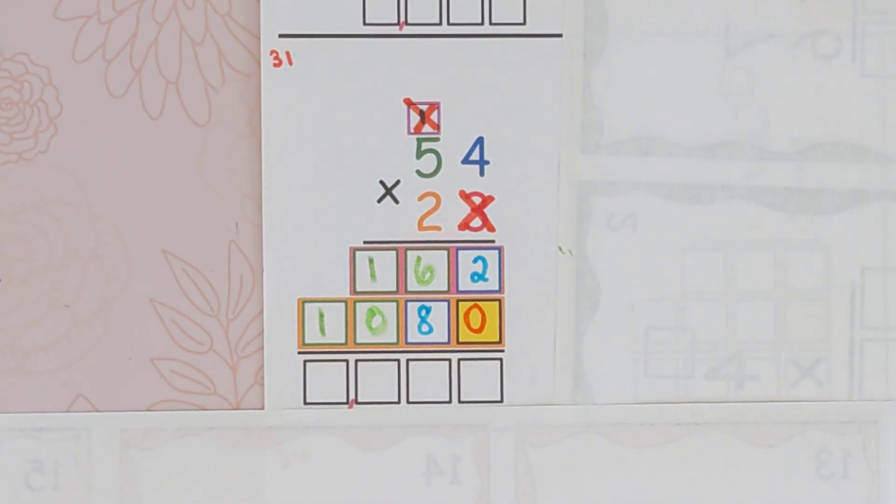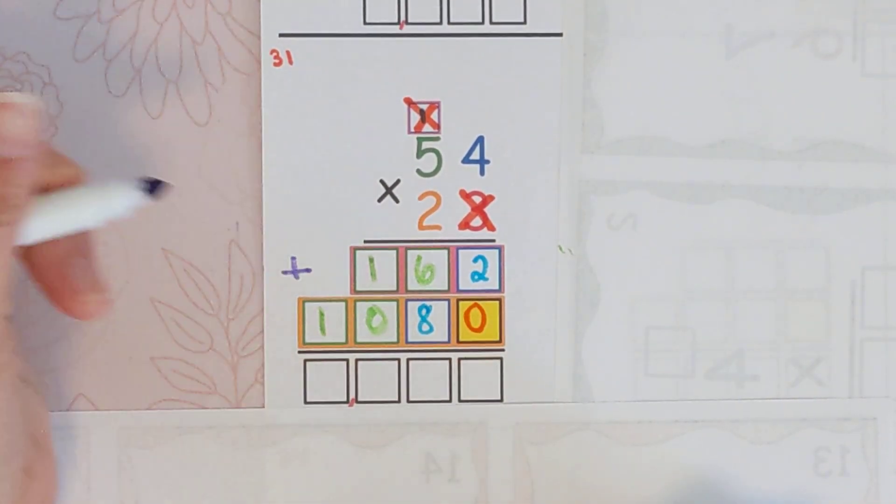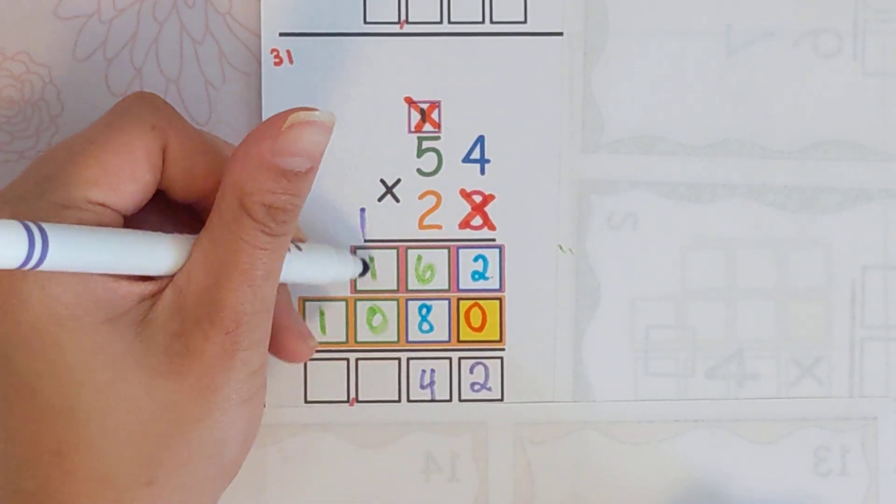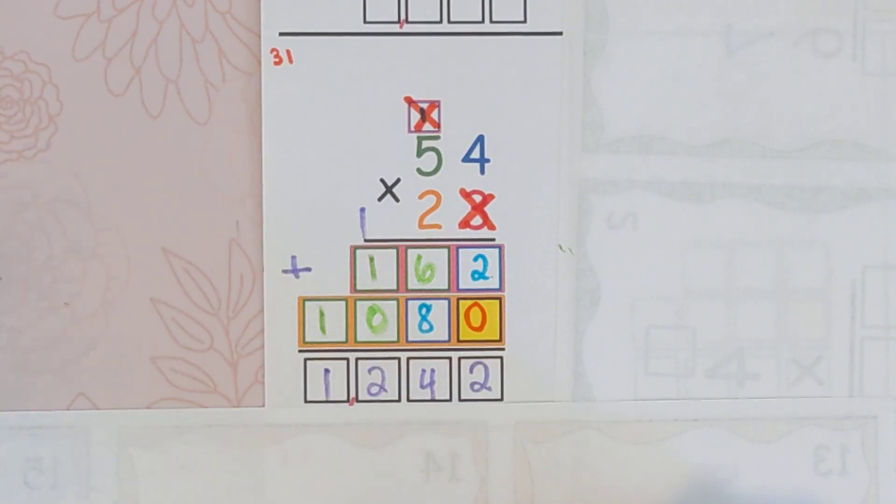What are you going to do next? That's right, you're going to add them all together. Two plus zero is 2. Six plus eight is 14. One plus one is 2. And 1, 1,242.